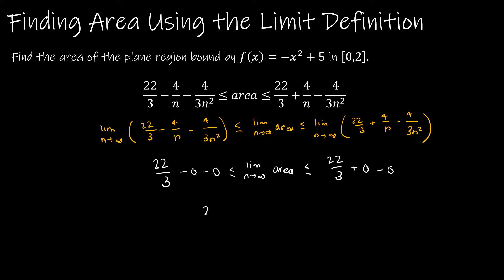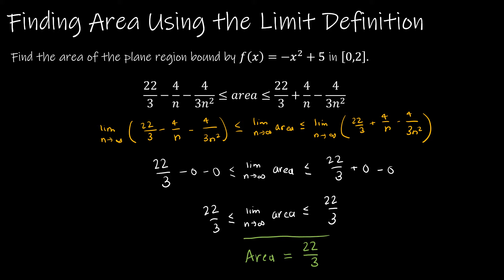So what I end up with is: 22/3 is less than or equal to the limit as n approaches infinity of area, which is less than or equal to 22/3. This means we have just found the exact area under the curve of negative x squared plus 5 from 0 to 2, which is 22/3. Now, if you'll notice, that was the same on the left and on the right — so even though we ended up with a slightly different function, we ended up with the exact same area on each side. That's not a coincidence, and in fact it's going to happen every single time.